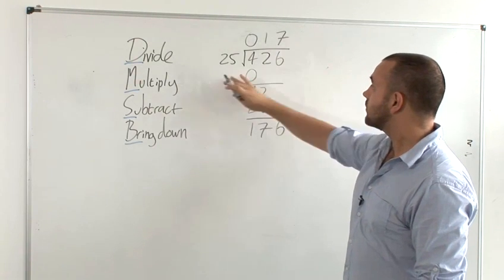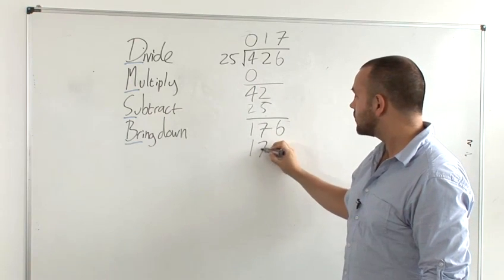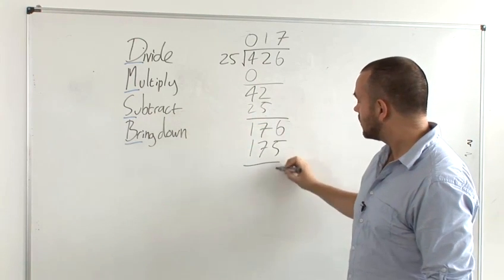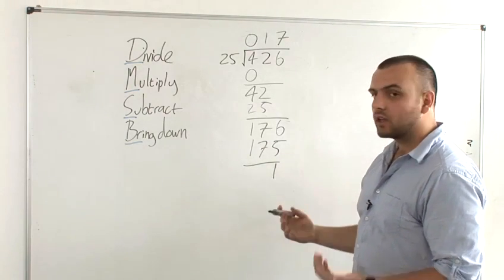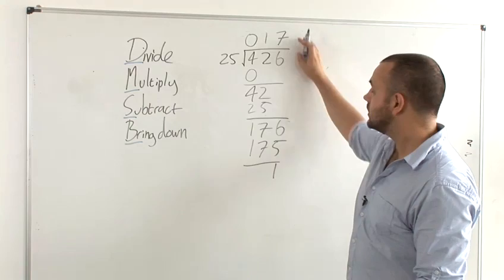But when you multiply 7 by 25, you'll end up with 175. And when you subtract, you'll end up with 1. No more numbers to bring down, so that gives us our answer this time of 17 remainder 1.